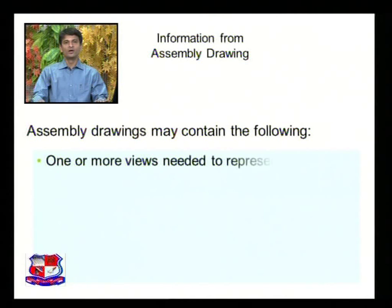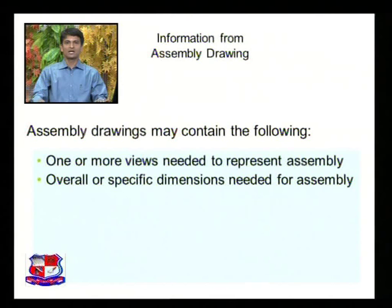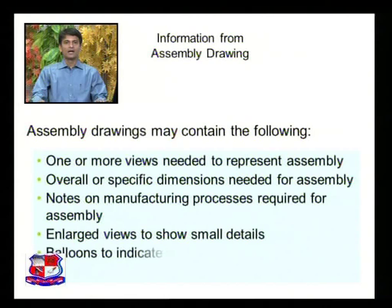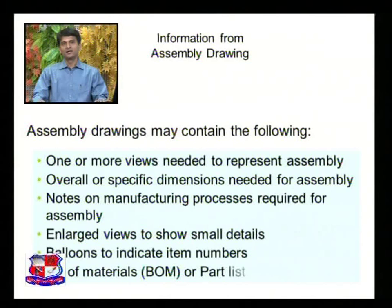What information do we gather from an assembly drawing? Assembly drawings may contain the following: one or more views needed to represent the assembly, overall or specific dimensions needed for assembly, notes on manufacturing processes required for assembly, enlarged views to show small details, balloons to indicate item numbers, and the part list or bill of material.